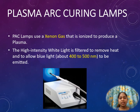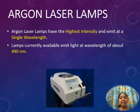Plasma arc curing lamps, or PAC lamps, use xenon gas that is ionized to produce a plasma. The high intensity white light is filtered to remove heat and to allow blue light, about 400 to 500 nanometers, to be emitted. Argon laser lamps have the highest intensity and emit a single wavelength. Lamps currently available emit light at a wavelength of about 490 nanometers.